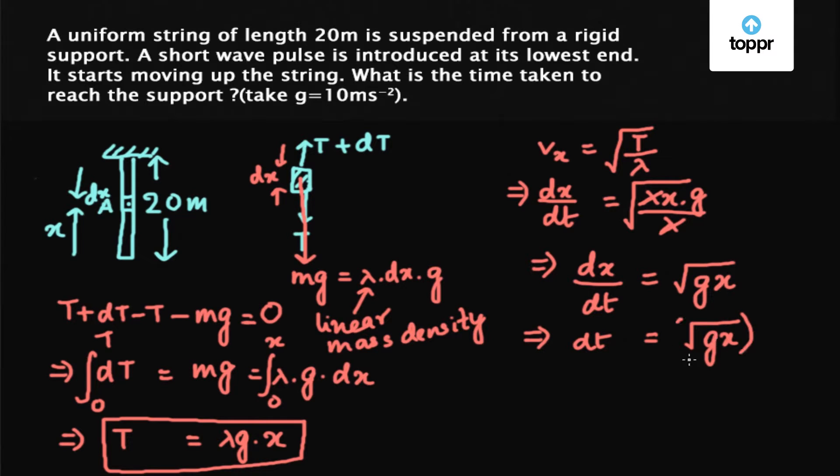Now integrating the left side from 0 to t and the right side from 0 to L, we get t equals 1 upon root g into 2 into root x from 0 to L.